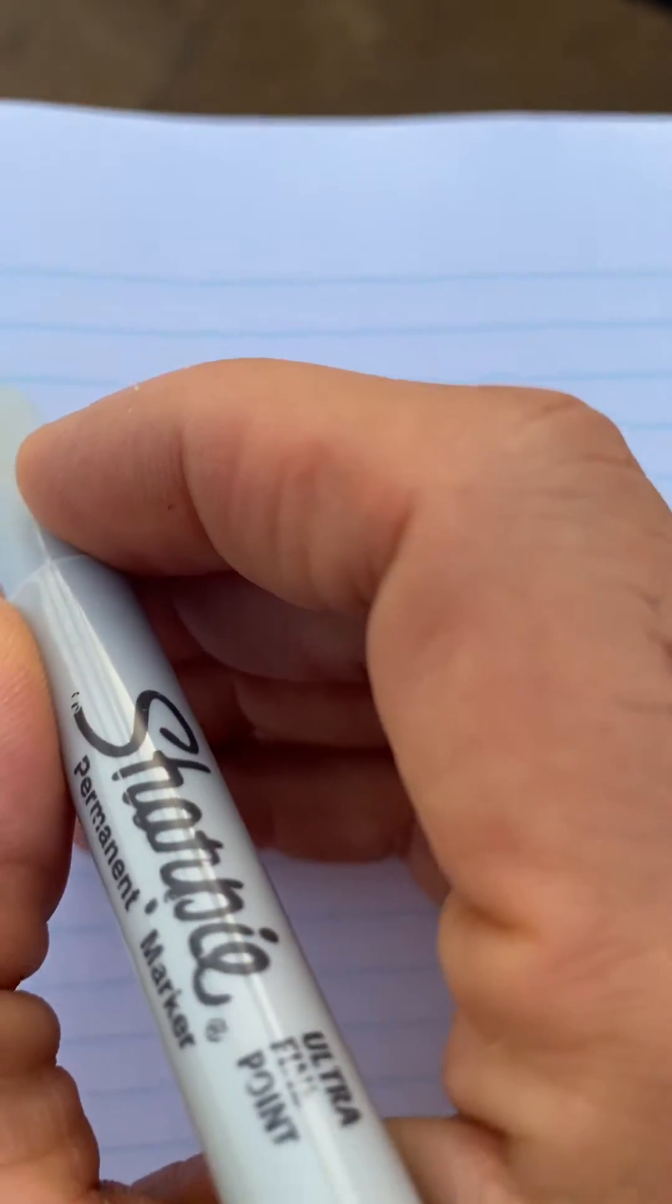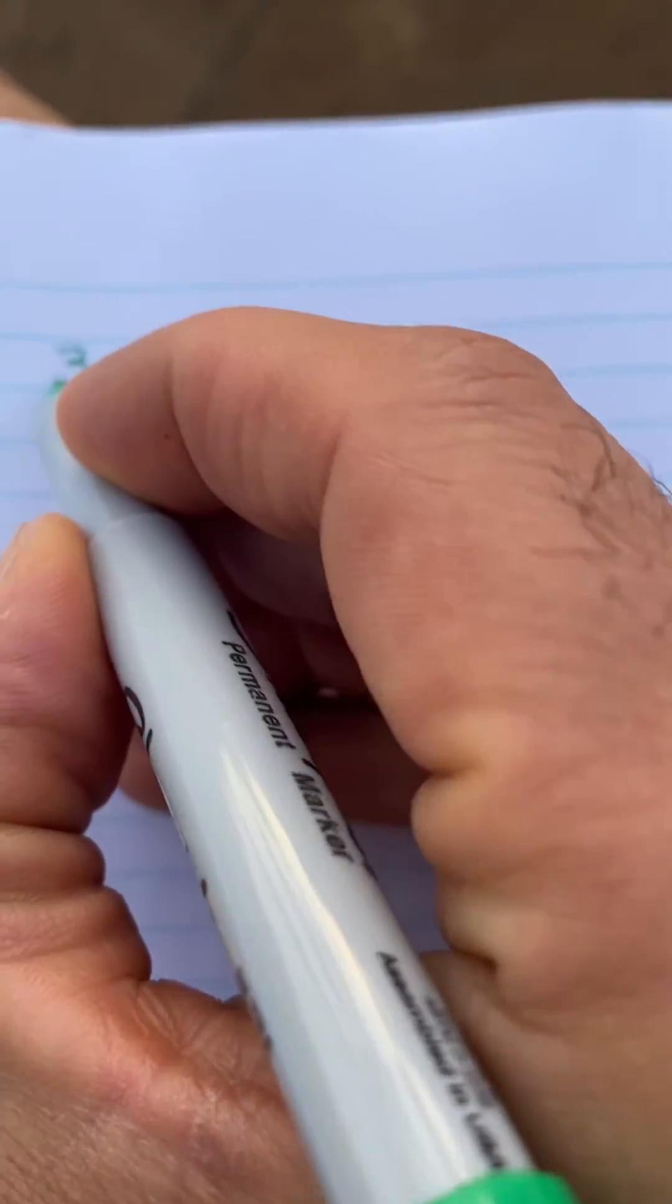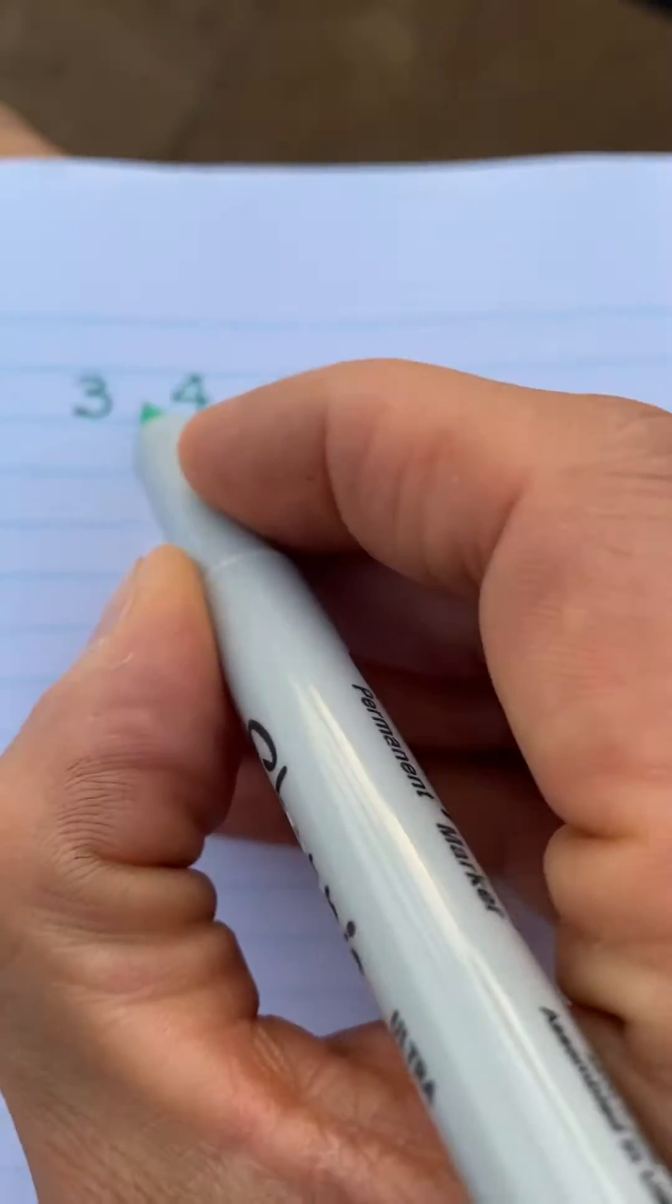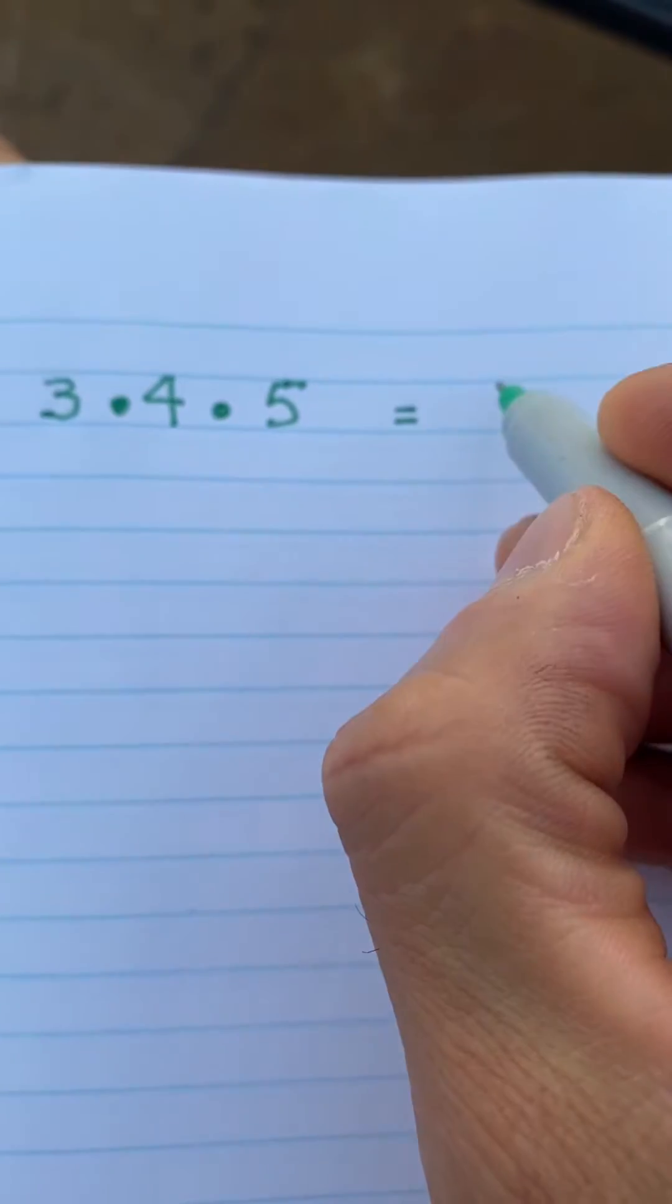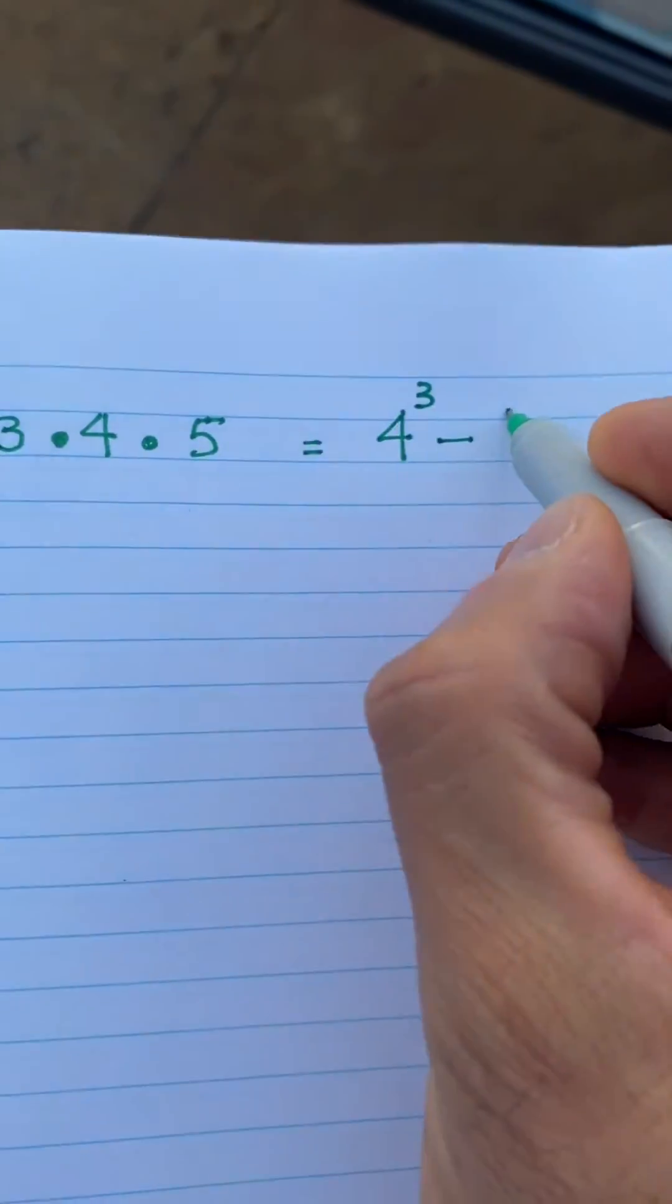I was just thinking, if we have three consecutive numbers—let's say 3, 4, and 5—three consecutive integers, we multiply them together. If you think about it, all you have to do is take the middle number, cube it, and then subtract the middle number again.